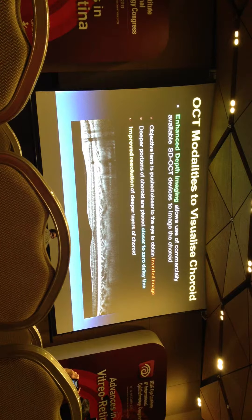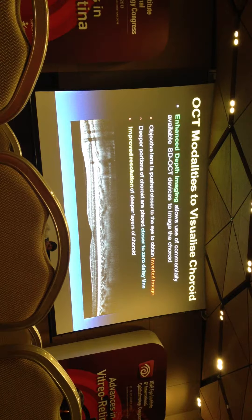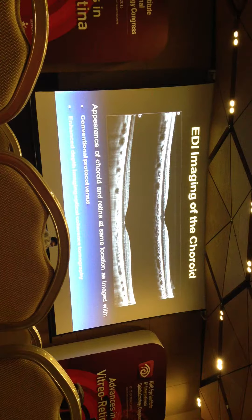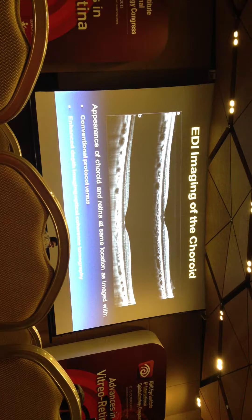In some OCT machines, like the Spectralis, when we push the objective lens very close to the eye, you actually see this inverted image. Now with the Spectralis software, there's a button you can press which will re-invert the image so that you see it as you normally would — but this is the raw image. This is an example of the same eye where, using a normal OCT scan, you see a bit of the choroid but not the choroid-scleral junction clearly. In the lower EDI scan, the choroid-scleral junction is especially clear.